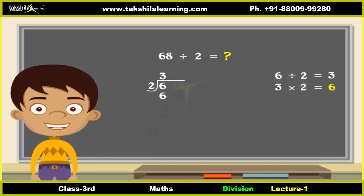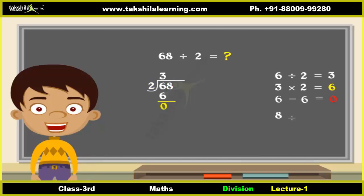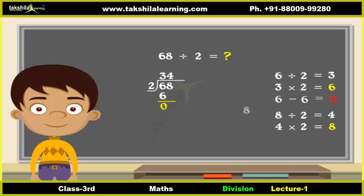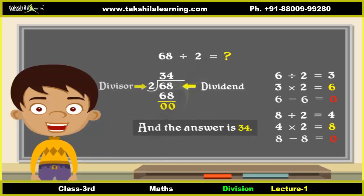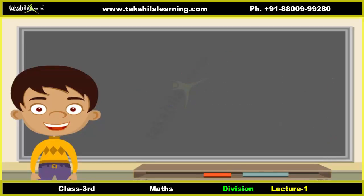Now we do subtraction: six minus six is equal to zero. We carry down the second number. Now we divide eight by two: eight divided by two is four, so we put that four right above the eight. Multiply four and two and put the answer right under the eight. Do the subtraction: eight minus eight is equal to zero. We ended with a zero at the bottom and the answer is thirty-four. Here sixty-eight is the dividend, two is the divisor, thirty-four is the quotient, and the remainder is zero.